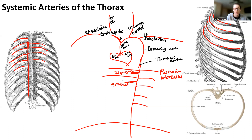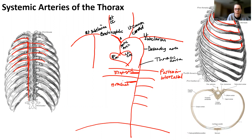The subclavian is going to have a couple of branches that you need to know. Basically, the subclavian comes right over the clavicle. Branching off of it, there's going to be a little tiny branch that comes anterior and runs parallel to the sternum, and it's going to have branches that come forward. This is the internal thoracic. It's going to be on the inside of the thorax.